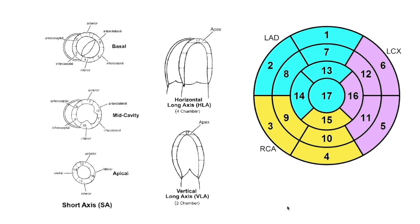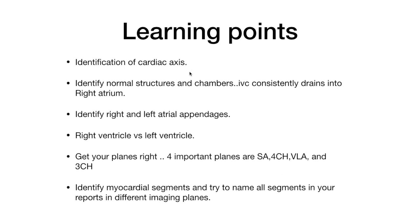In summary: six segments at the base, six at the mid cavity, four at the apex, and one true apical segment form the complete 17-segment heart model. Key learning points: identify the cardiac axis; identify normal structures and chambers; remember that the IVC consistently drains into the right atrium and then the right ventricle; identify right versus left ventricle using consistent features; acquire the four key planes — short axis, four chamber, vertical long axis, and three chamber; and name all myocardial segments in your report across different imaging planes to reach a diagnosis.